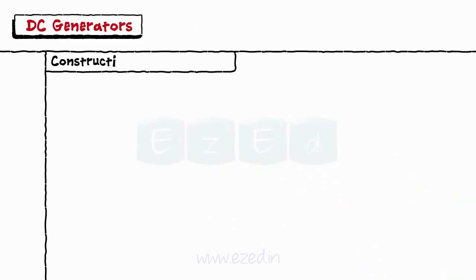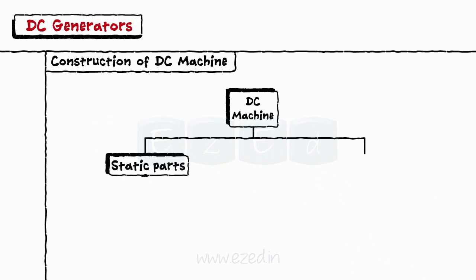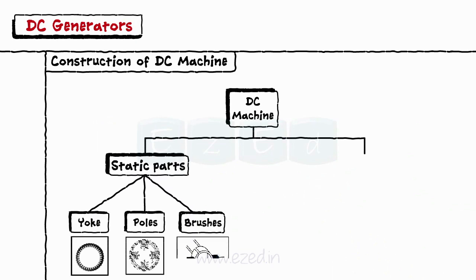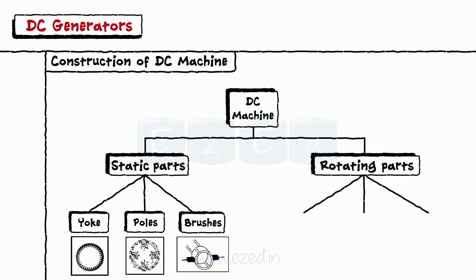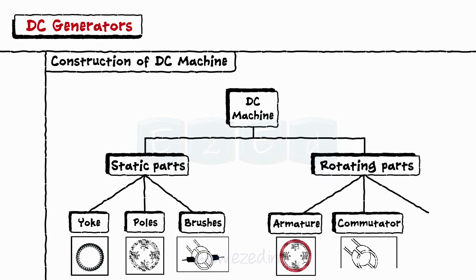Let's see the construction of a DC machine. It is made up of stationary parts such as yoke, poles and brushes and rotating parts such as armature, commutator and bearings.